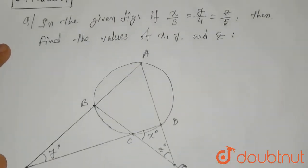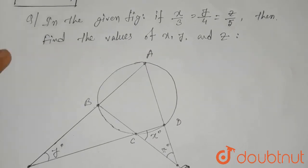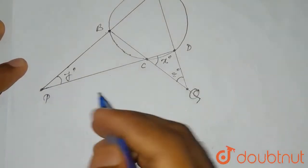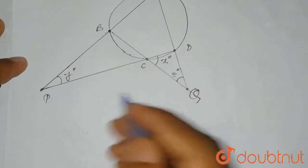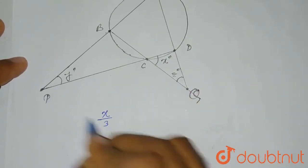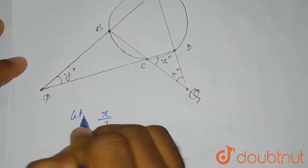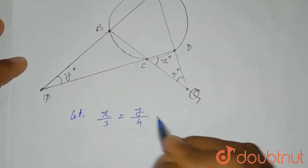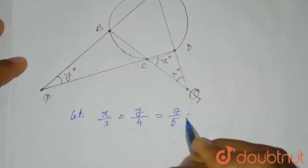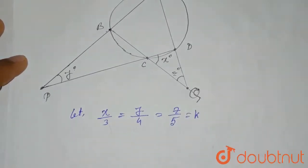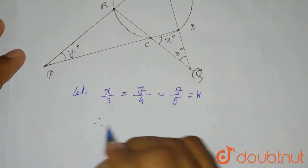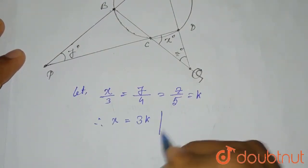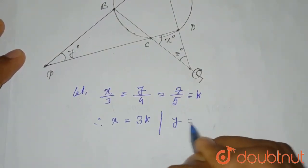It is given that x/3 = y/4 = z/5. We set each ratio equal to k, so x/3 = y/4 = z/5 = k. From here we find that x = 3k, y = 4k, and z = 5k.